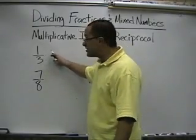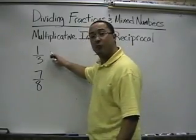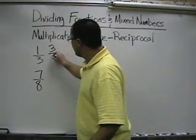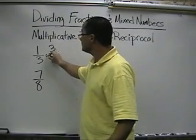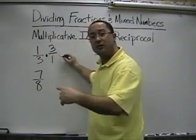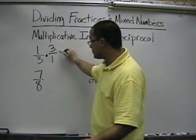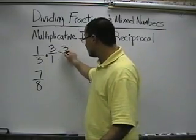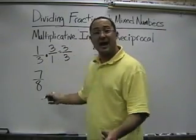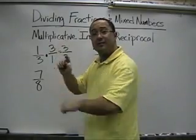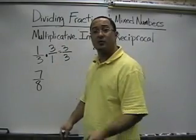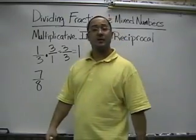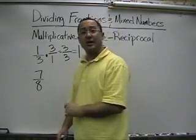Here's 1/3. What is the reciprocal of 1/3? We flip it and we get 3 over 1. When we multiply them together, 1 times 3 equals 3, and 3 times 1 equals 3. Any fraction where the top number and the bottom number are the same equals 1, so 3 over 3 equals 1.